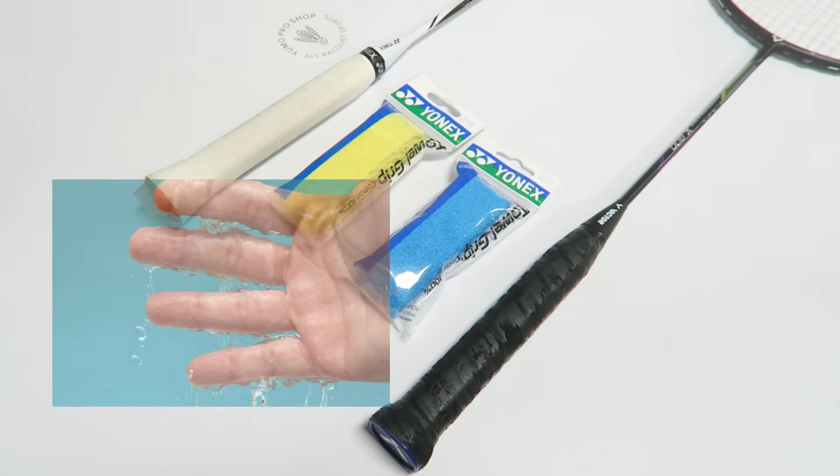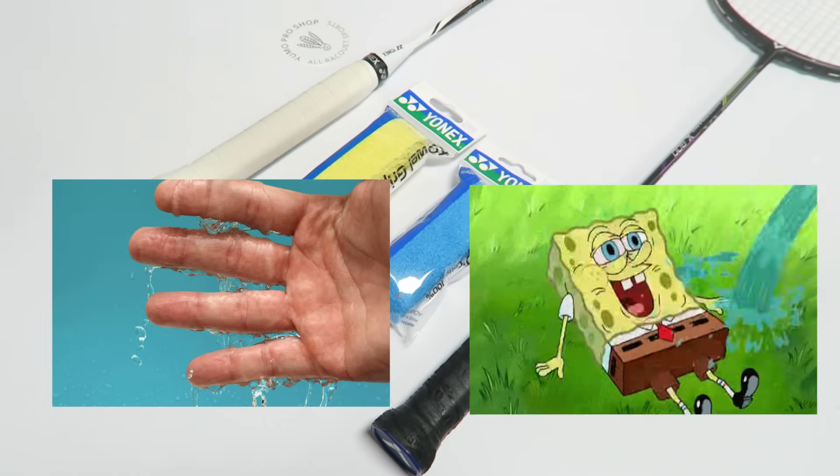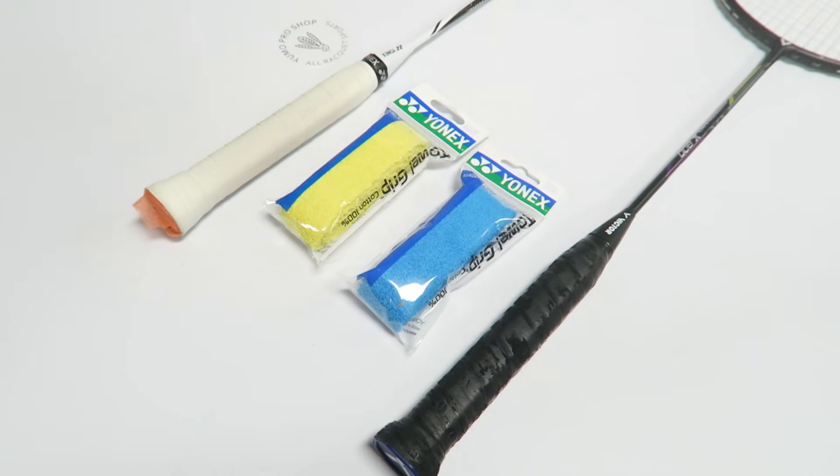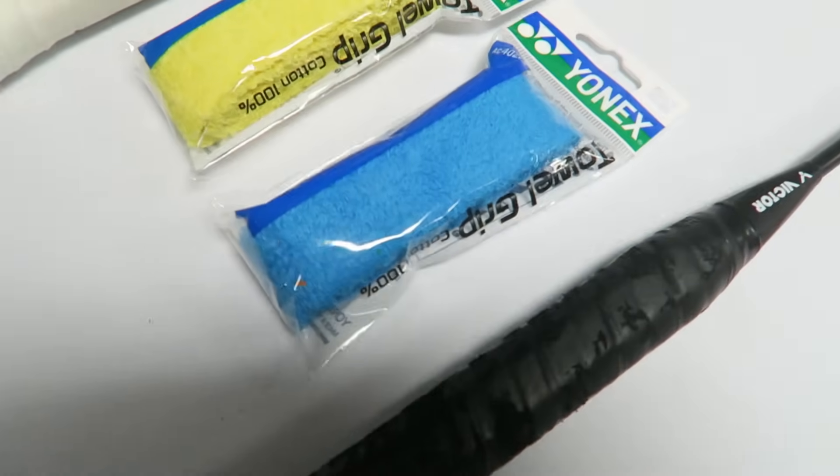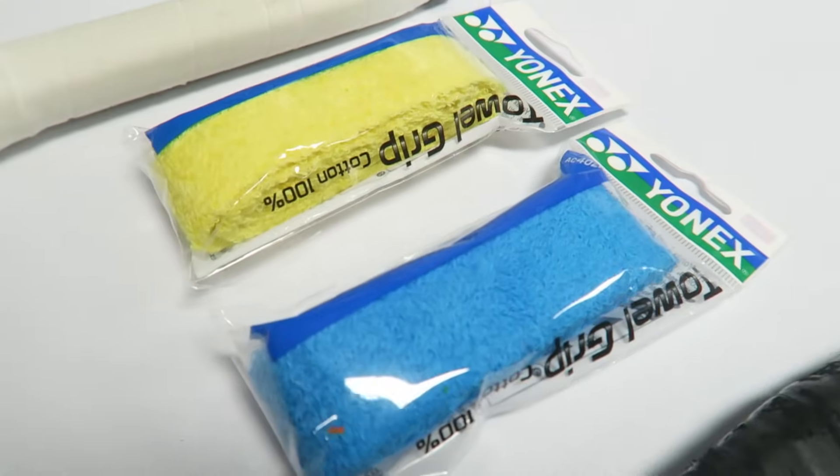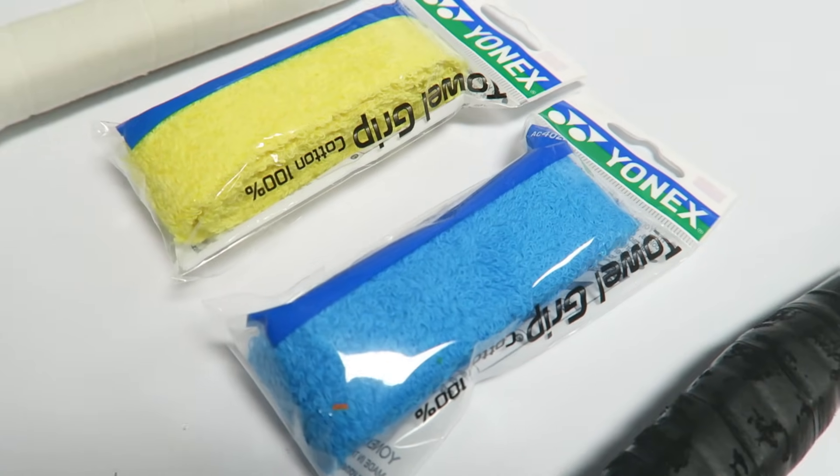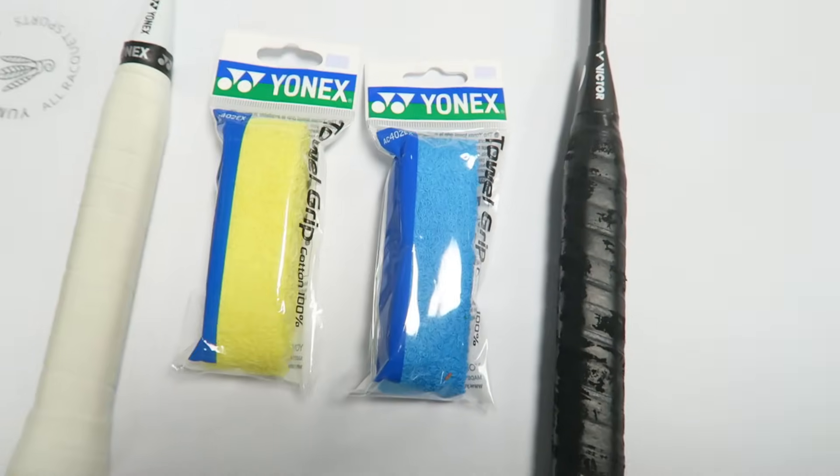Towel grips are good for people who have sweaty hands as the cotton material is very absorbent. The downside to using towel grips is that they do not provide as much cushioning as PU grips, and they are not very tacky, especially when it gets wet from your sweat.